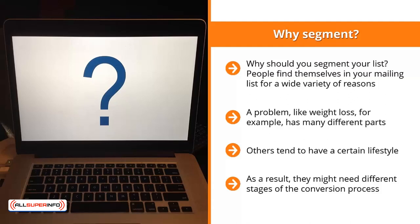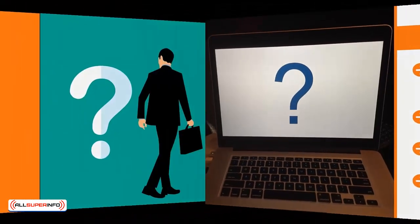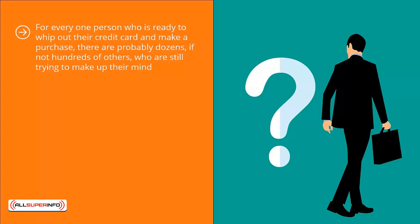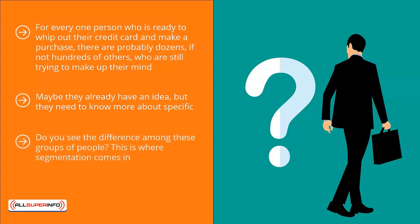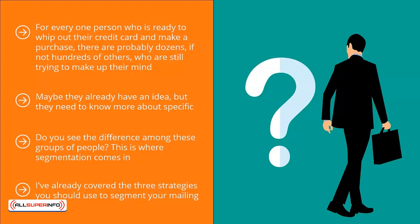Some subscribers may need more information before they commit to buying a product, while others are already clear on the solution but just need a recommendation they can trust. You can't send the same message to these people and expect the same results. For every one person ready to whip out their credit card, there are probably dozens or hundreds still making up their mind. This is where segmentation comes in — you need to set up a process to send messages that push people closer to conversion. After implementing the three main strategies, there are more detailed segmentation criteria to apply.